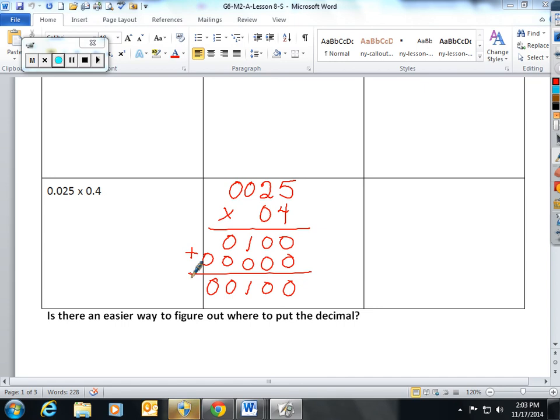Then you have to figure out where to put the decimal back in. I have a number in the thousandths place multiplied by a number in the tenths place. Your answer should be a thousand times ten, which should be in the ten thousandths place. That's four places after the decimal.